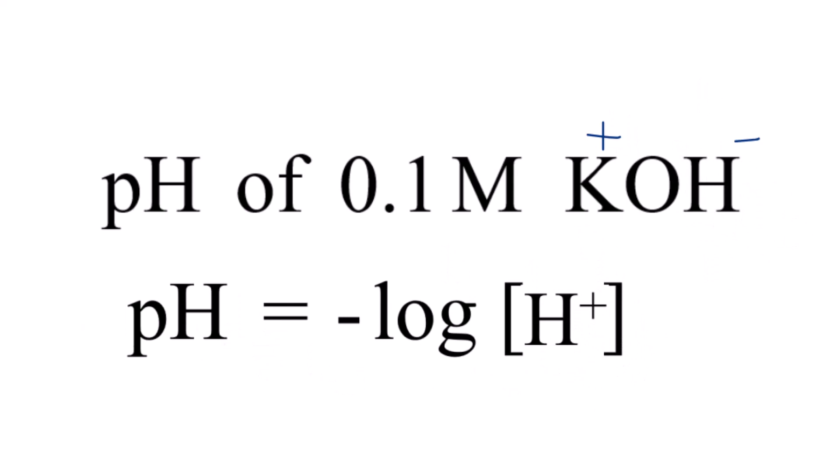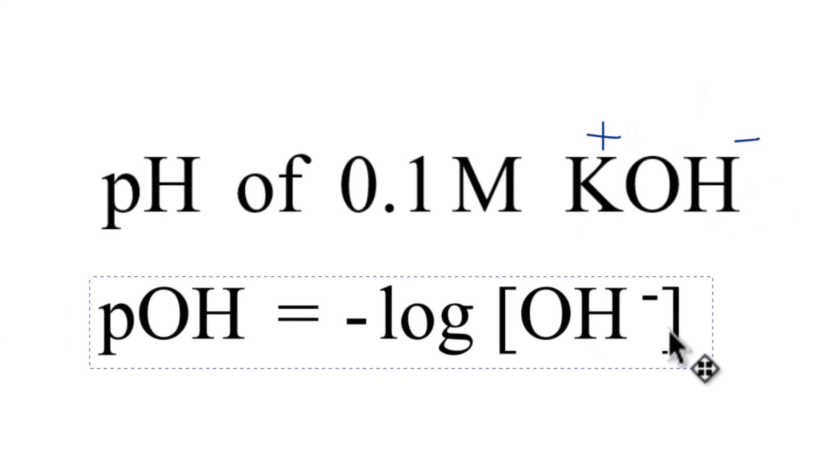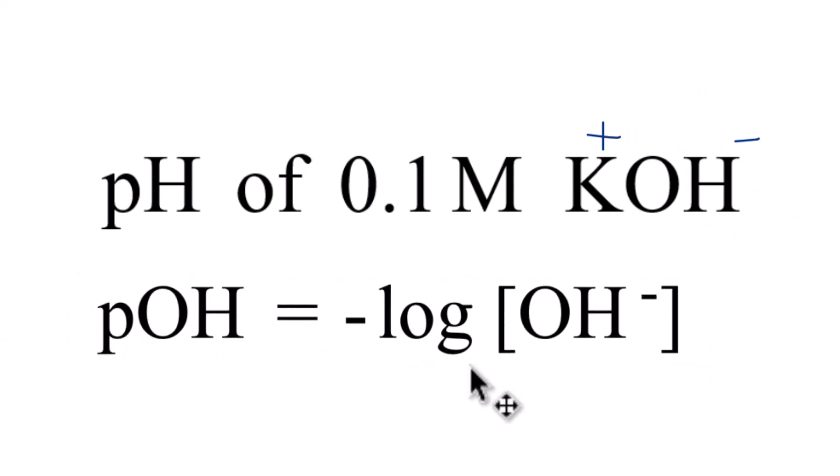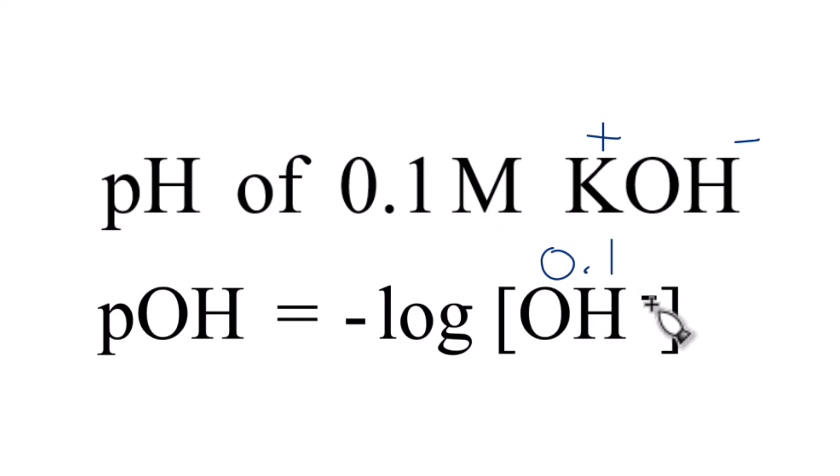So we need to use this formula, where we find the pOH, which is the negative log of the concentration of the hydroxide ion, OH-. We know that is 0.1, so we're going to take the negative log of 0.1.